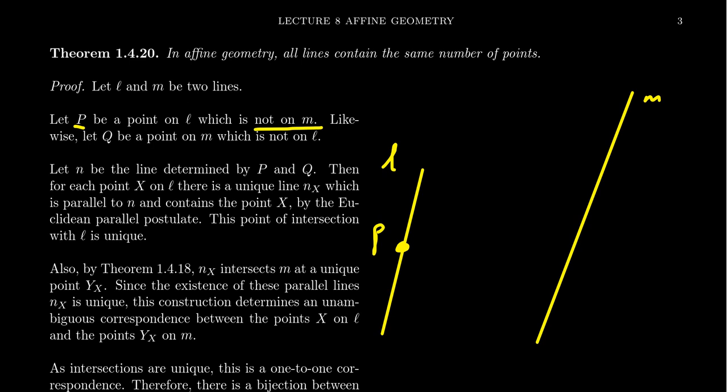It's possible that L and M actually intersect each other — we don't claim they are parallel. But intersections in incidence geometry are unique, so there's only one point of intersection between the two lines. By secancy there's a second point, and that second point can't be on both lines. So we do know we have a point on L that's not on M.